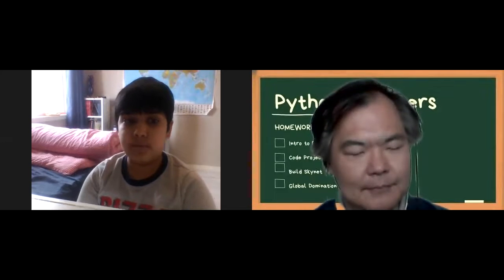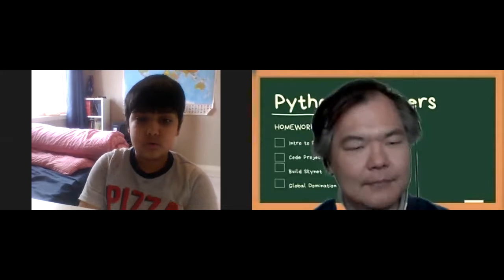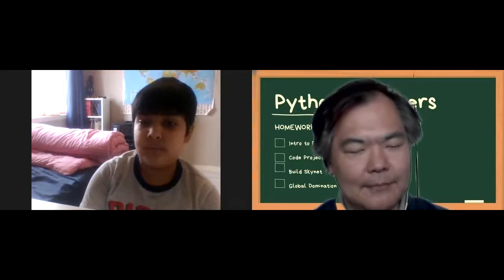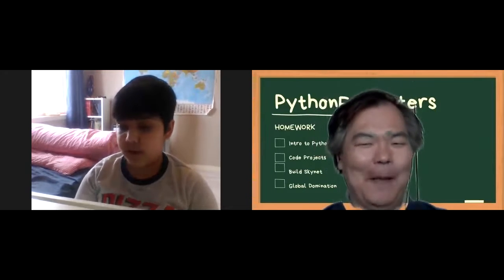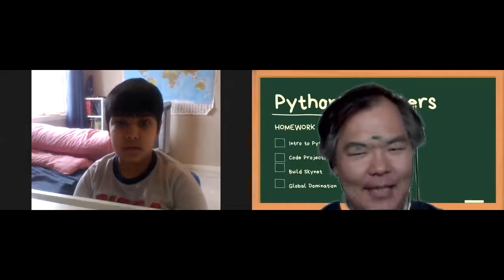Boolean can only have two types of values: true or false. But you have to write it with a capital T if you're doing true, and a capital F if you're doing false. Okay, I got that. Okay, good.